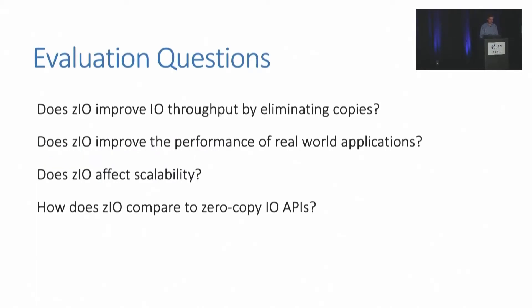We want to look at a few evaluation questions. First, does Zeo improve I/O throughput by eliminating copies? Does Zeo improve the performance of real-world applications? Does Zeo affect the scalability of applications? Because Zeo relies on page table modifications, there's a concern that Zeo may induce more TLB shootdowns. And finally, how does Zeo compare to zero-copy I/O APIs?